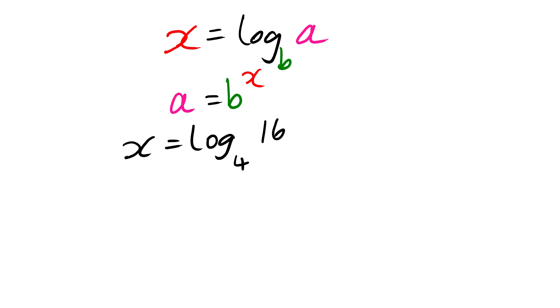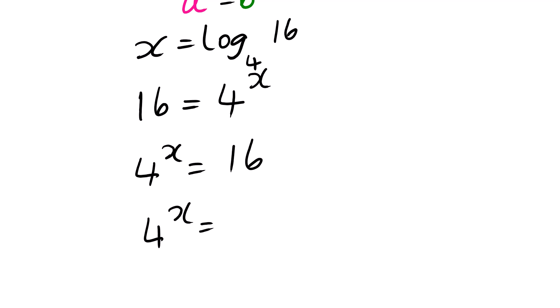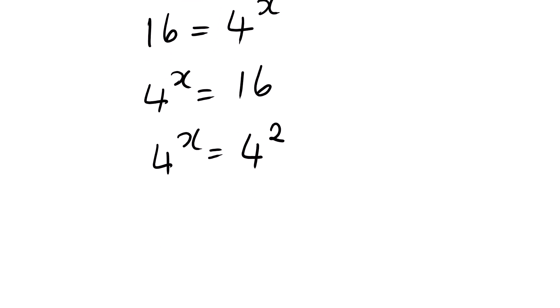Now suppose you are given x equals log base 4 of 16. How do we reverse this? We know that this will be 16 equals 4 to the power x. So we have 4^x equals 16, which is 4 squared. Since the bases are the same we can quickly drop them and x equals 2.